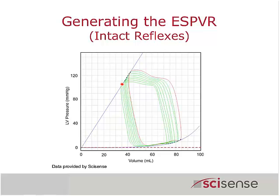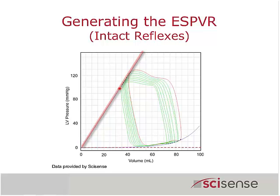That is just for a single loop. However, if you take several loops, as you would get when you do the IVC occlusion, and you are now generating a line through those points, that would be the ESPVR and the maximal elastance for a series of loops.